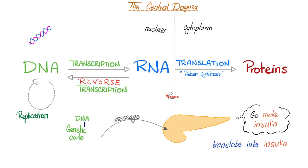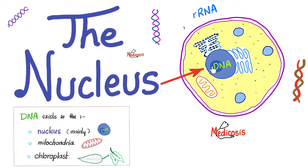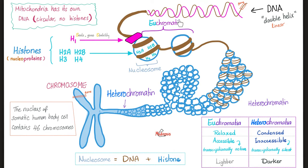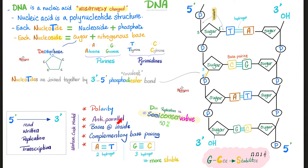Quick review. The central dogma is to take DNA and copy it — that's called replication — or convert it to RNA via transcription. Then you translate it into meaningful proteins. Most of your DNA is in the nucleus. DNA is a double helix, polar and anti-parallel. The bases are on the inside, but the sugar-phosphate backbone is on the outside. There is complementary base pairing: A binds with T, and C binds with G. Adenine binds thymine with two hydrogen bonds, but guanine binds cytosine via three hydrogen bonds.